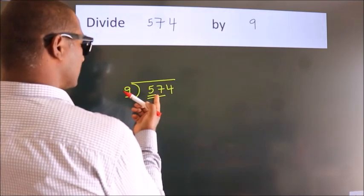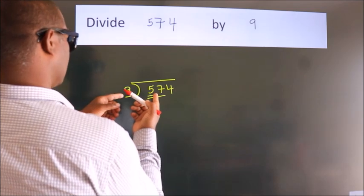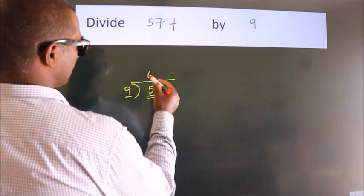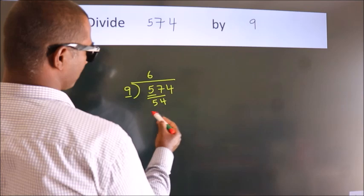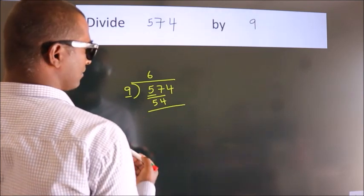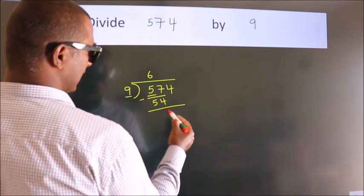A number close to 57 in 9 table is 9, 6, 54. Now, we should subtract, we get 3.